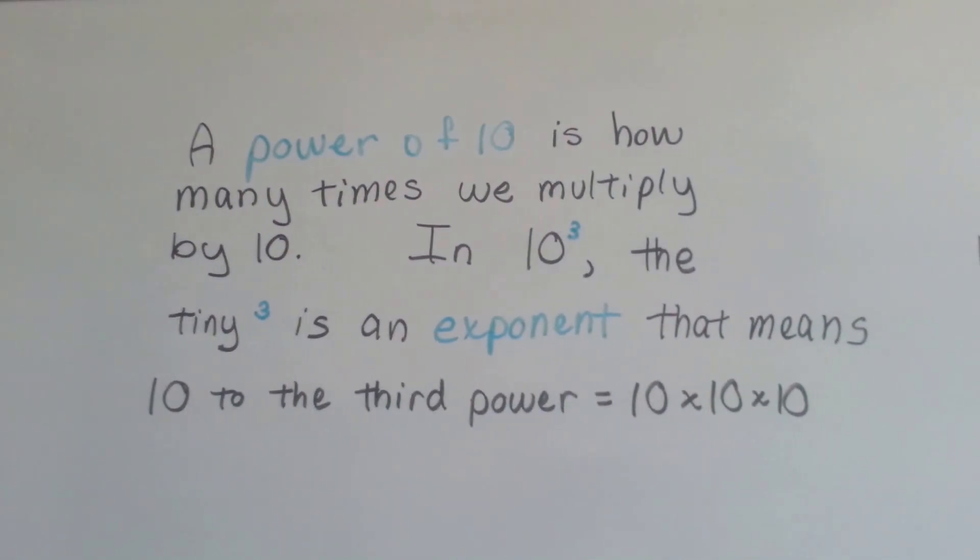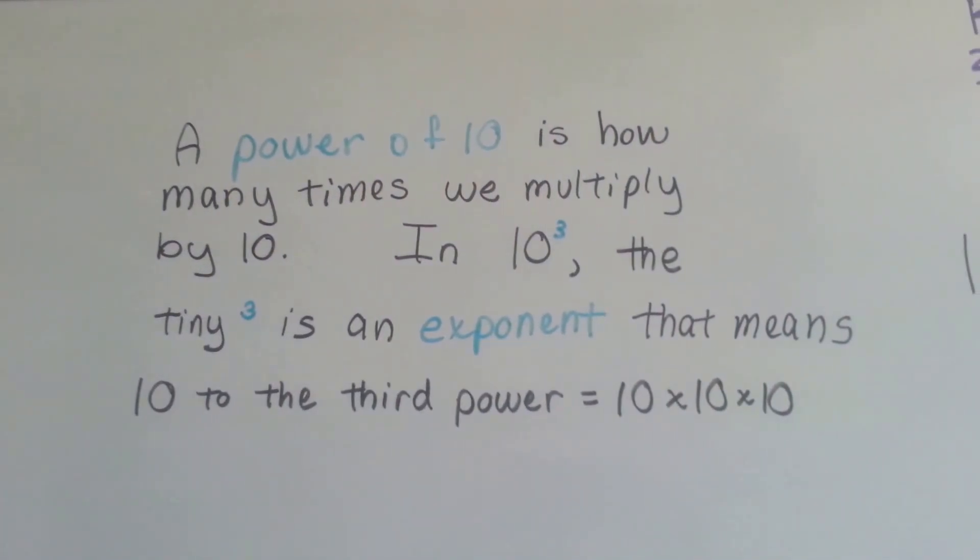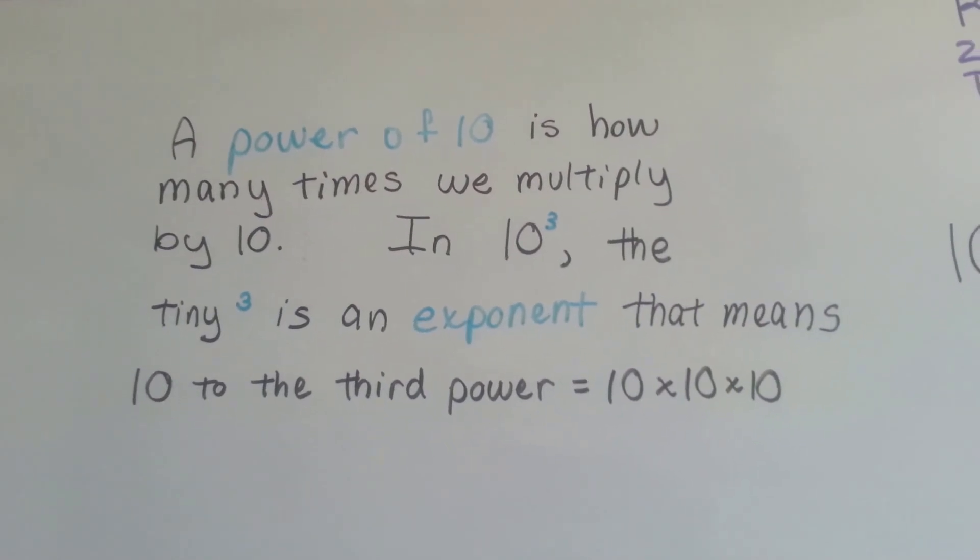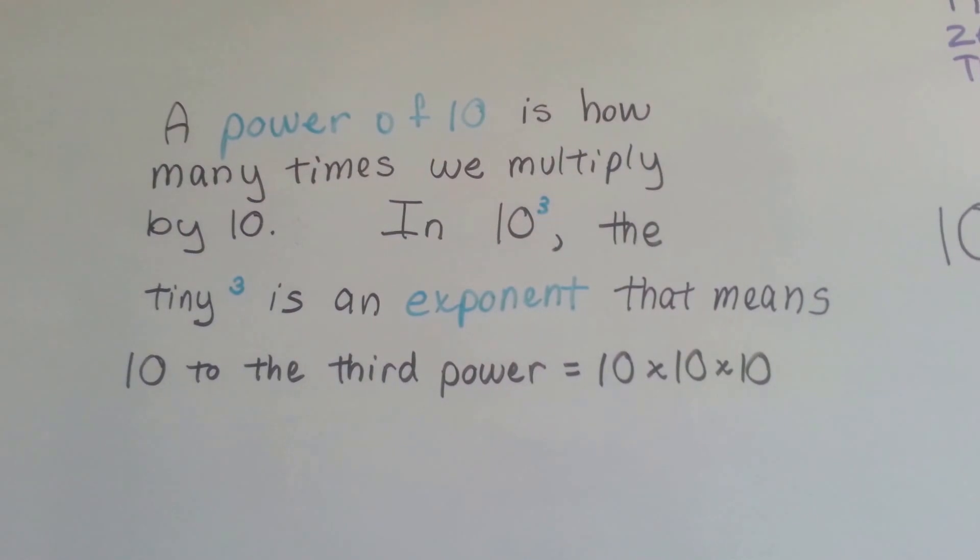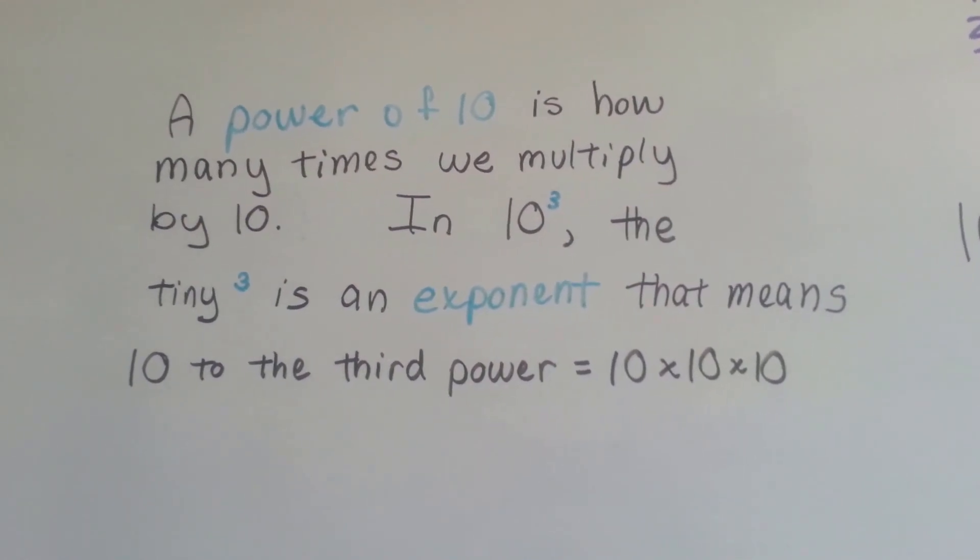A power of 10 is how many times we multiply by 10. When you see 10 with the little 3 like that, the tiny 3 is an exponent, and it means 10 to the third power. It means we're going to multiply 10 to itself three times, 10 times 10 times 10.